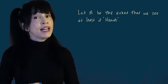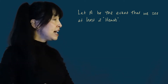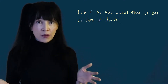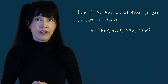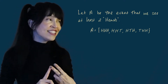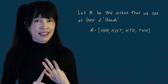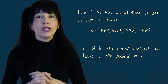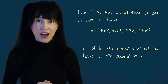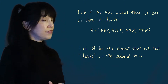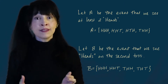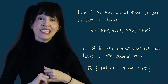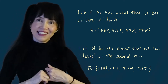Let's define event A to be the event that we saw at least two heads. Out of our eight outcomes, that consists of heads-heads-heads, heads-heads-tails, heads-tails-heads, and tails-heads-heads — so four outcomes. And let's let B be the event that we see heads on the second toss. That also happens to consist of four outcomes: heads-heads-heads, heads-heads-tails, tails-heads-heads, and tails-heads-tails.